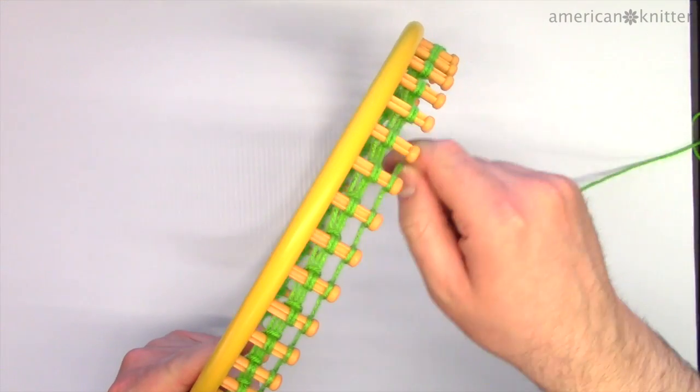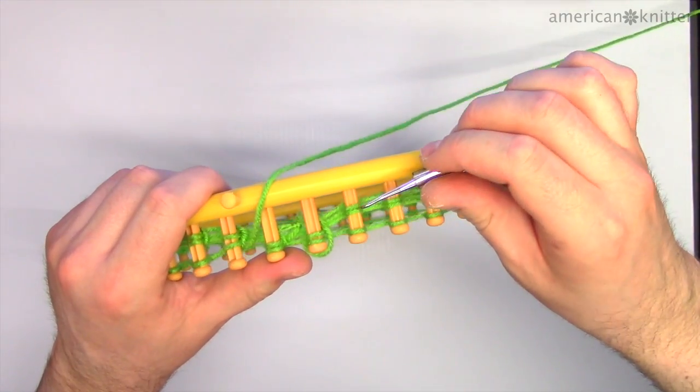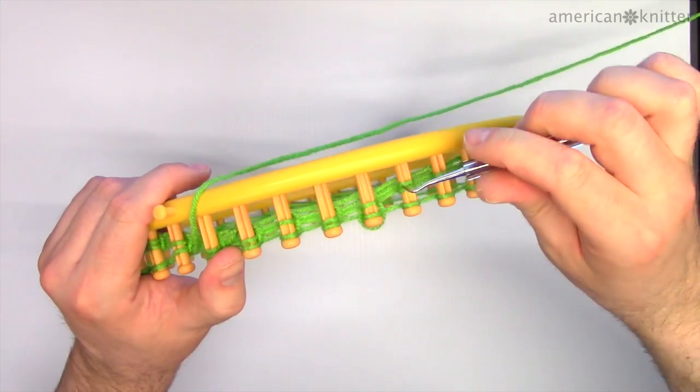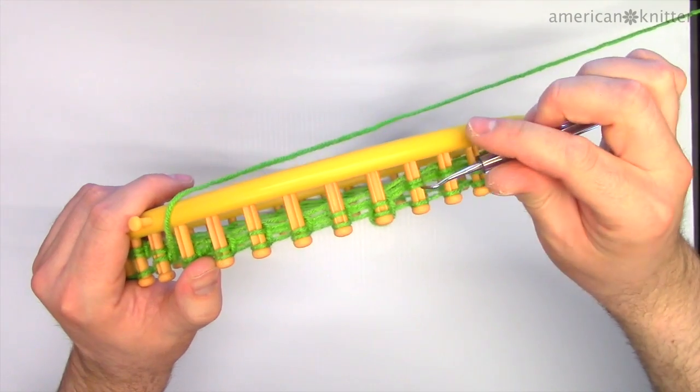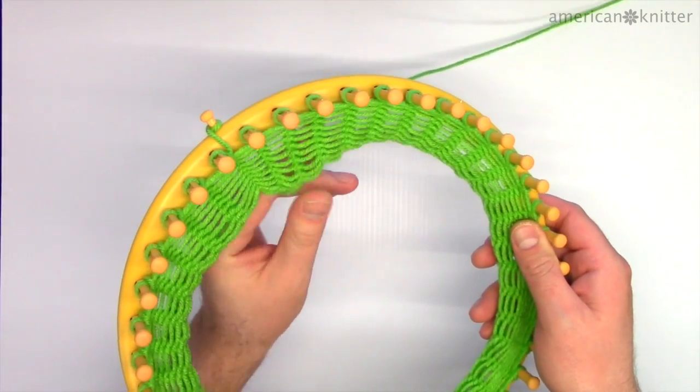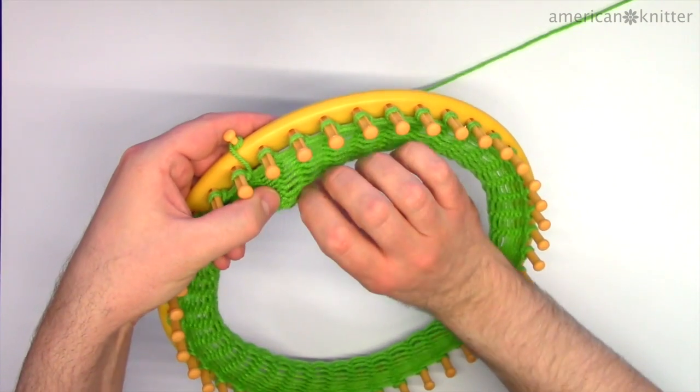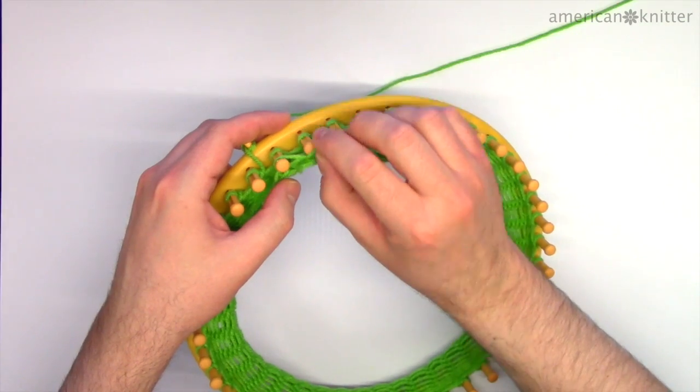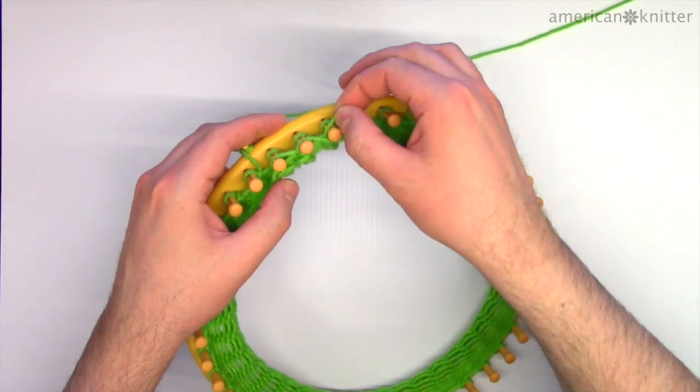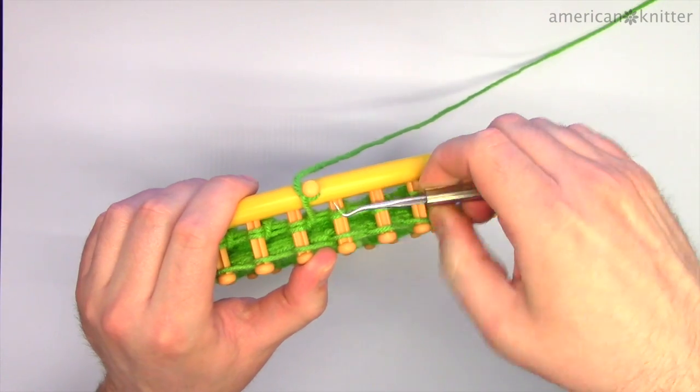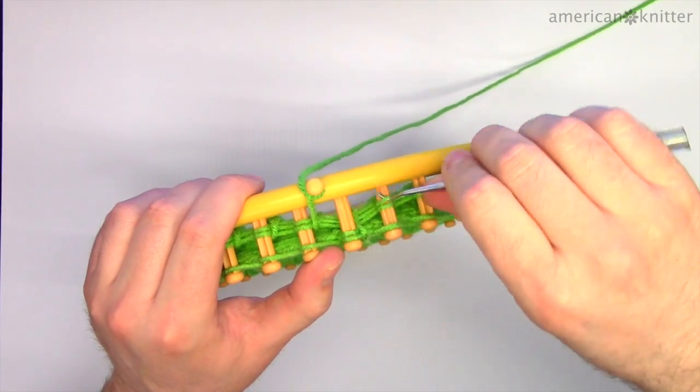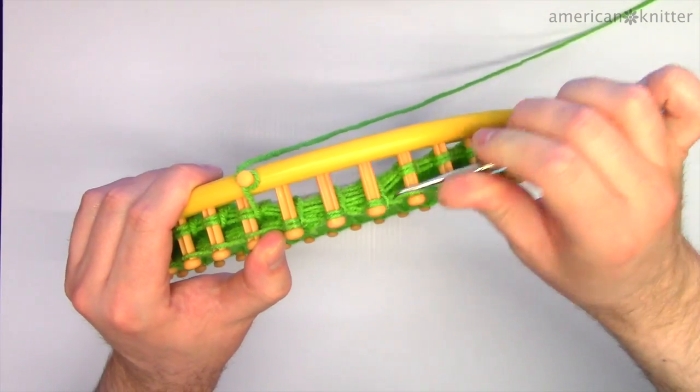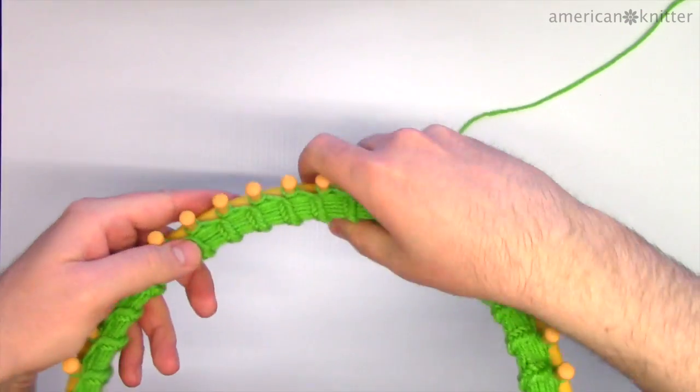These 14 rows of yarn will make the brim of the beanie. 14 rows is generally pretty small for a brim, but we want to make sure the creeper face is the most prominent feature of the hat. With the 14 rows finished, it's time to secure the brim of the beanie. To do this, add the very first row of yarn back onto the pegs. Bring the strand up and over each peg all the way around the loom. Then pick the bottom strand of yarn up and over each peg to secure the brim portion of the beanie. It should look like this when you're done.